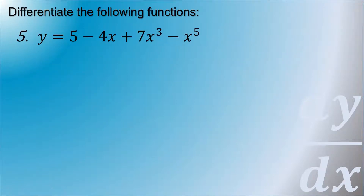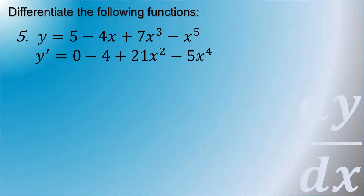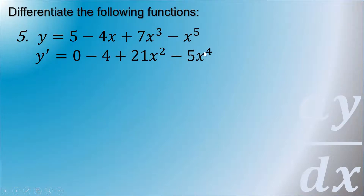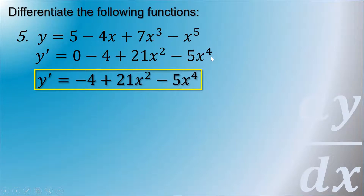Fifth example: y is equal to 5 minus 4x plus 7x cubed minus x to the fifth power. Finding y prime: the derivative of the constant 5 is 0, the derivative of negative 4x is negative 4, the derivative of 7x cubed is 21x squared (since 7 times 3 is 21 and 3 minus 1 is 2), and the derivative of x to the fifth is 5x to the fourth. So y prime equals negative 4 plus 21x squared minus 5x to the fourth power.